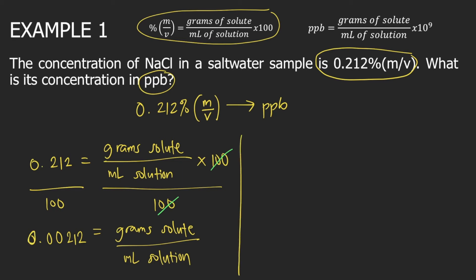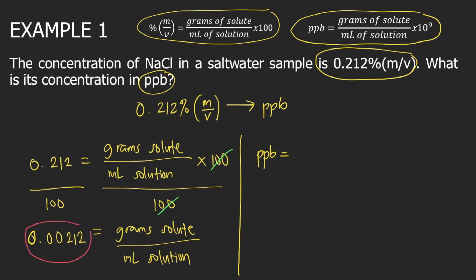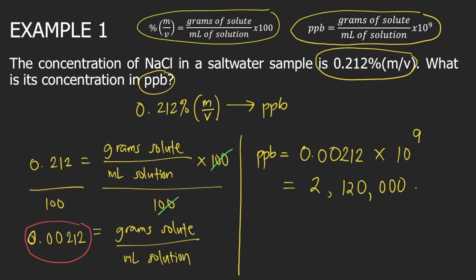Now that you have grams of solute over mL of solution, the next step is to use the formula for PPB. PPB equals grams of solute divided by mL of solution — which we just calculated as 0.00212 — multiplied by 10 to the 9, or 1 billion. So 0.00212 times 1 billion equals 2,120,000 PPB, or in scientific notation, 2.12 times 10 to the 6 PPB. This is the answer.